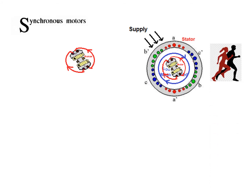Since both the stator and rotor have power supplied to them, the rotation is quite synchronized — just like two persons running almost in synchronization. There is no lag between the stator magnetic field rotating and the rotor itself rotating.